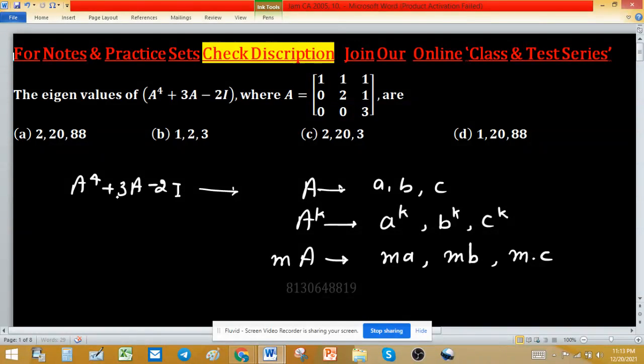Apply this concept to find eigenvalues of this matrix. As A is upper triangular matrix or a triangular matrix, eigenvalues of triangular matrix will be diagonal elements and diagonal elements are 1, 2, 3. So eigenvalues are 1, 2, 3.